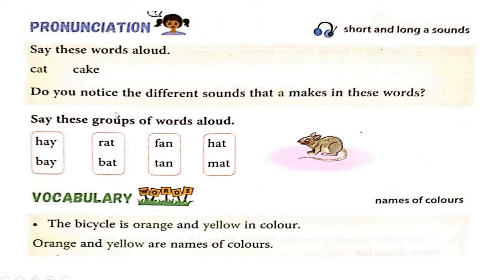See here, can you hear the difference? This is cat — C-A-T. And this is cake — C-A-K-E. See the difference between cat and cake. A is different in both. It is the letter A, but when we speak, we can't say cat the same way as cake.